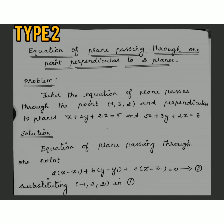Next, we see Type 2: the equation of a plane passing through one point and perpendicular to two planes. The problem is: find the equation of the plane passing through the point (−1, 3, 2) and perpendicular to two planes: x + 2y + 2z = 5 and 3x + 3y + 2z = 8. Here, one point and two planes are given — this is Type 2.